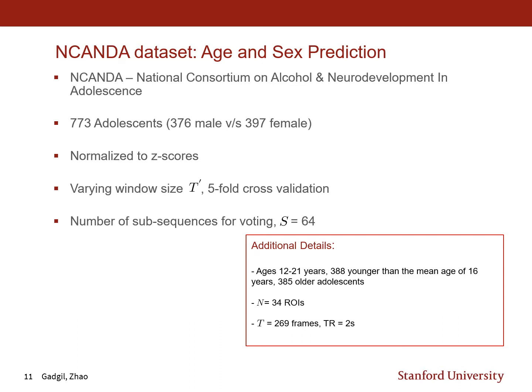We used two datasets for the prediction task. The first is the NCANDA dataset, or the National Consortium on Alcohol and Neurodevelopment in Adolescence. All analysis for this dataset was performed by my co-author Chin-Yu Zhao. This dataset consists of 773 adolescents, almost equally divided between males and females. The BOLD signal values are normalized to Z-scores. We varied the window size T prime and performed 5-fold cross-validation to find the optimal value. The number of sub-sequences for voting is S equals 64, with 34 ROIs and a BOLD signal length of T equals 269 frames with a TR of 2 seconds.